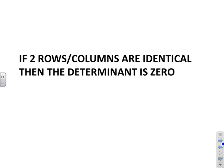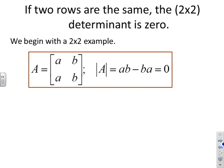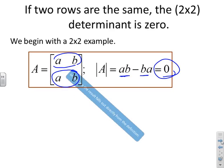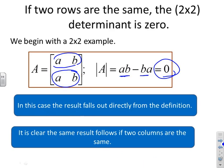First rule: if two rows or columns are identical, the determinant must be zero. We'll demonstrate this with a two-by-two example where the first row and the second row are the same. Calculating the determinant gives AB minus BA, which is clearly zero. So if both rows of a two-by-two are the same, the determinant is zero.